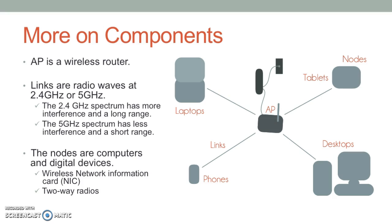As for nodes, they're the computers and digital devices you're using. Laptops and desktops have wireless network interface cards that receive and send data through radio waves, and your mobile devices are like two-way radios — they receive and transmit radio waves to link to the access point.